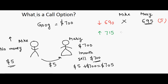On the upside, if the stock goes to $715, Mike would exercise the option to buy at $700. He doesn't even have to spend $700 in the market — he can just close the option and pocket $15. Since he paid $5 for it, his profit is $10. For Mary, she sells the stock at $700 but also collected the $5 premium, totaling $705, so she made $5 profit.